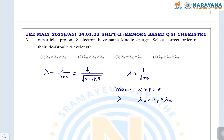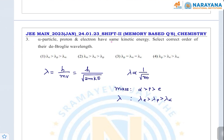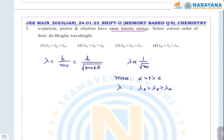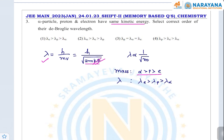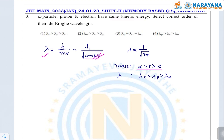The next question is based on de Broglie wavelength. An alpha particle, proton, and electron have the same kinetic energy — what is the order of wavelength? De Broglie wavelength λ = h/mv = h/√(2m·KE). Since kinetic energy is the same, λ is inversely proportional to √mass. Mass of alpha particle > proton > electron. Therefore, wavelength of electron > proton > alpha particle.